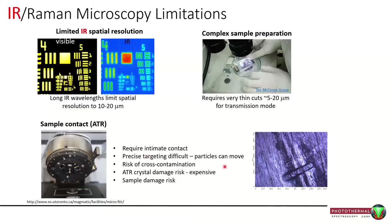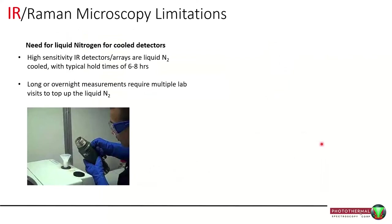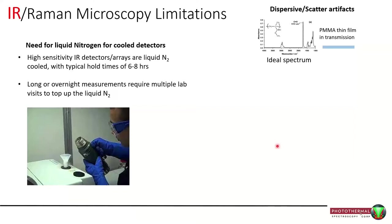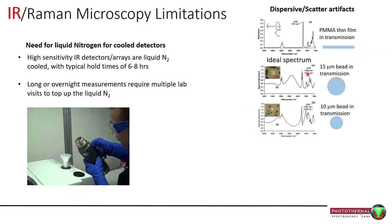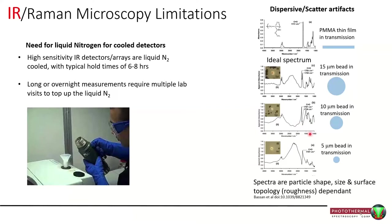Other issues are that the best spectra are obtained in transmission mode, but for that you need to cut samples quite thin — 5 to 20 microns at most — and cutting things thinly is sometimes difficult or impossible. In those cases you may use a micro ATR, but that requires contact, involves difficult positioning, contamination concerns, and the crystal and sample can be damaged. There are also dispersive and scatter artifacts: a PMMA thin film in transmission gives a lovely spectrum, but the same material as 15-micron beads gives shifted, split peaks with weird baselines — spectra very dependent on particle shape, size, and surface roughness.